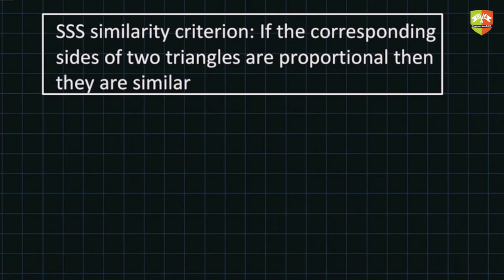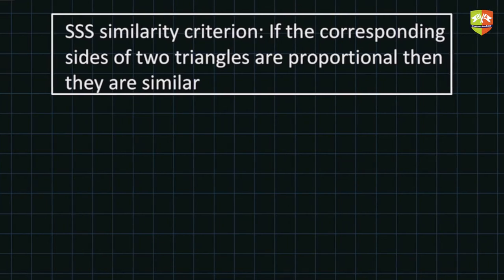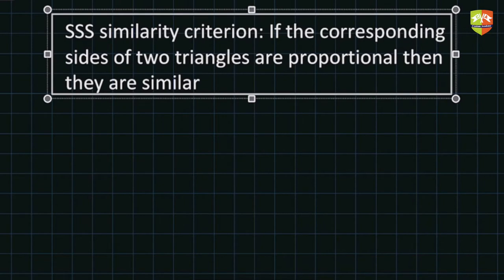Hello and welcome to another session on triangles. As we discussed in the previous session, we are now going to prove the SSS similarity criterion. In the last session you all observed how we validated this particular criterion, which says that if the corresponding sides of two triangles are proportional then they are similar. If you have not checked the GeoGebra demonstration, I would request you to go there first and then come here to understand the proof.